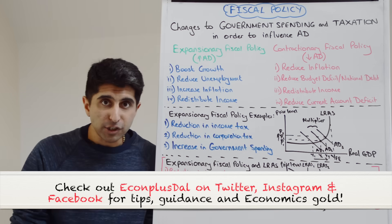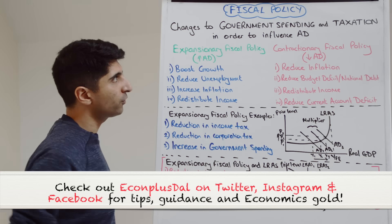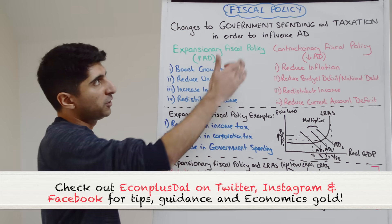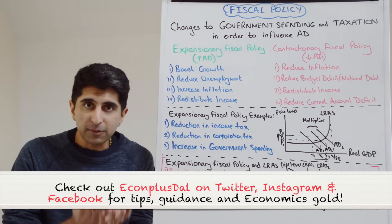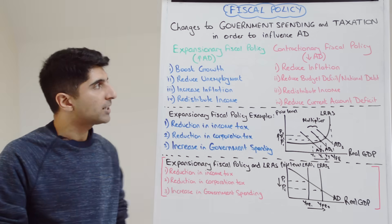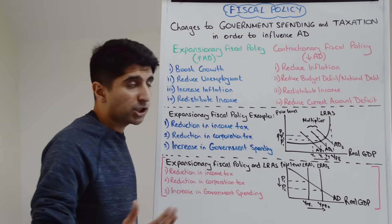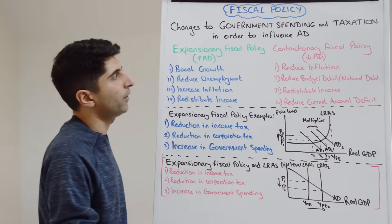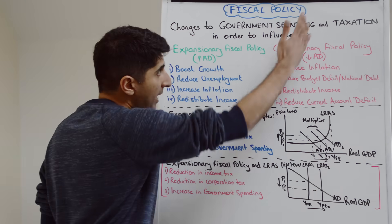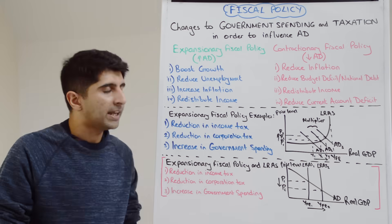It can be expansionary in nature — expansionary fiscal policy — which involves changes to government spending and taxation that aim to boost aggregate demand. Or it can be contractionary in nature — contractionary fiscal policy — which involves changes to government spending and taxation in order to reduce aggregate demand.